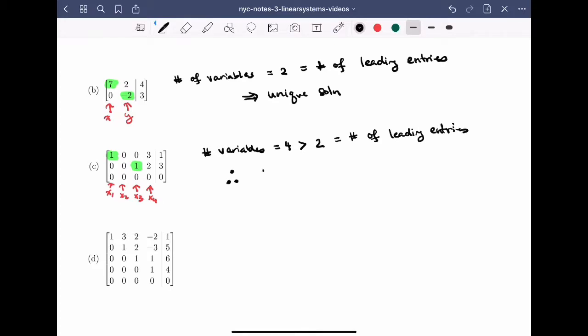And that number is bigger than 2, which is equal to the number of leading entries. Therefore, I have 4 minus 2, which is equal to two free variables and definitely infinitely many solutions.